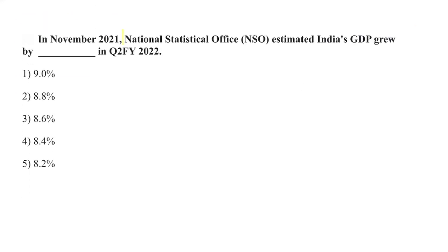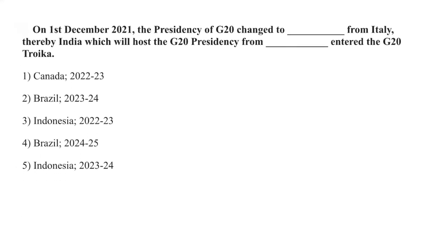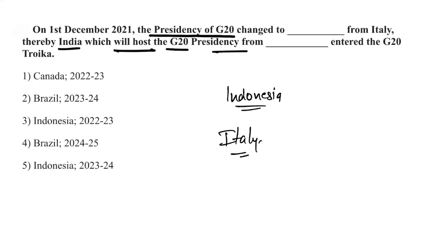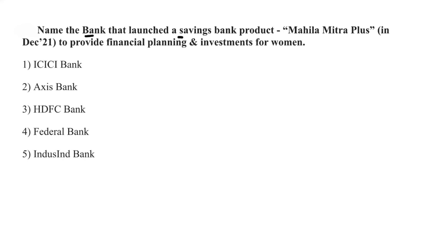The National Statistical Office estimated India's GDP growth at 8.4% in the second quarter of 2021. On 1st December, the G20 presidency passed to Indonesia from Italy. India will host the G20 presidency from 2022 to 2023.